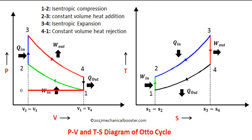The efficiency of the Otto cycle is mainly a function of the compression ratio. For a given ratio of Cp and Cv, a higher compression ratio gives higher thermal efficiency. However, the compression ratio of a petrol engine is usually limited to a maximum of 9 or 10 due to knocking at high compression ratios.